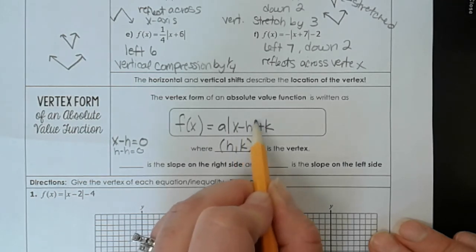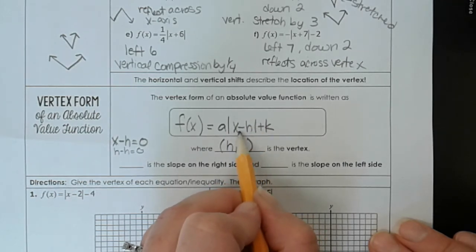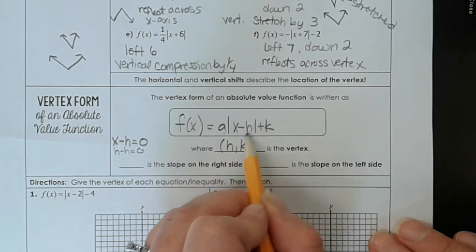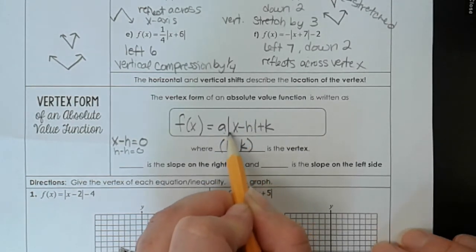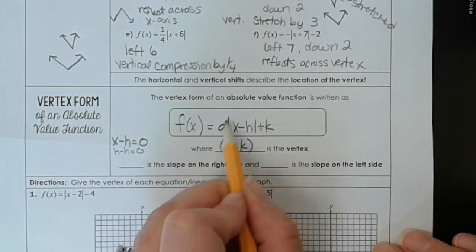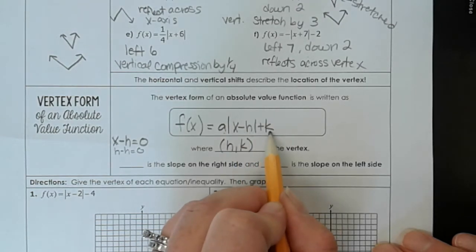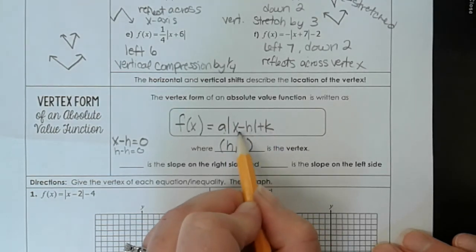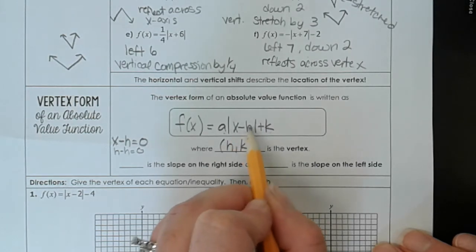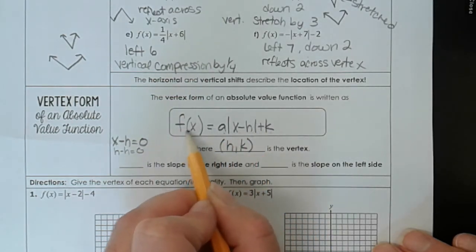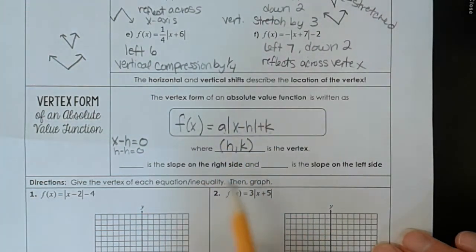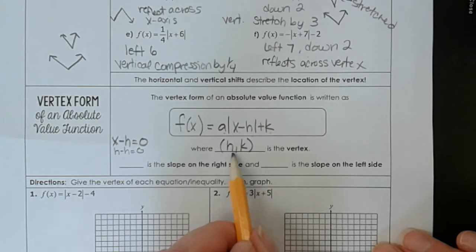Absolute value of zero is still zero. We multiply it by a. It's still zero. It doesn't matter what a is. This whole thing is always going to be zero at the value h, because h minus h is zero. This whole thing becomes zero, and all we have left is k. So when we plug h into this equation, our input is h, our output, our y value becomes k, because this whole thing becomes zero and all we have left is k. So that's why our vertex is h, k.